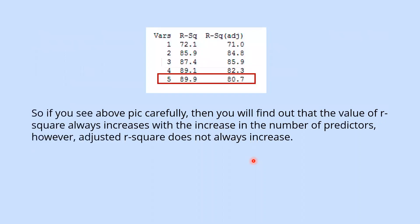So if you see the above pic carefully, then you will find out that the value of R2 always increases with the number of predictors. However, the adjusted R2 does not always increase. It is varying.